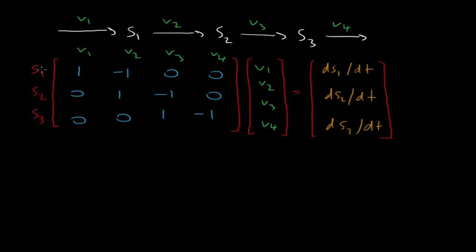In the previous video we showed this small linear chain, this small network comprising four reactions in three species. I showed how you can represent the differential equations in this alternative matrix form. This form is made up of three components: a matrix of stoichiometric coefficients, a vector of reaction rates, and a vector of rates of change.